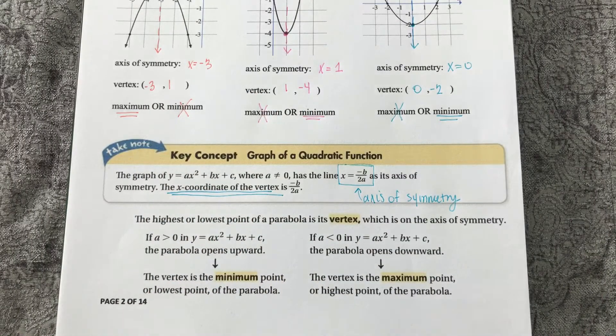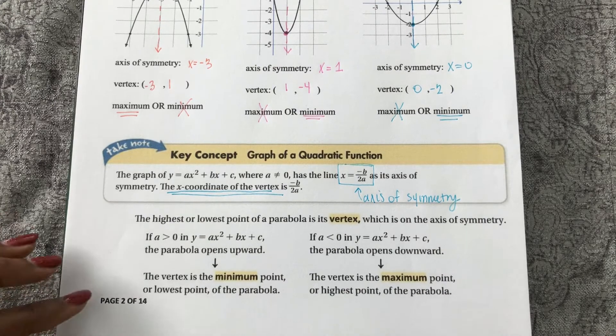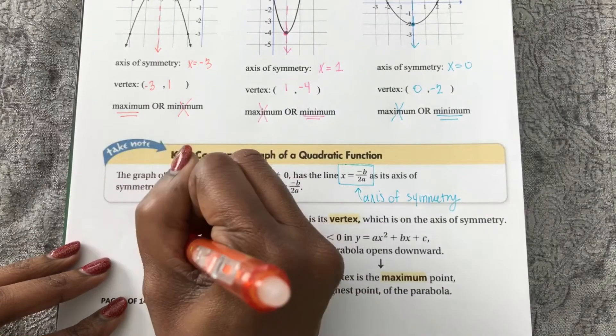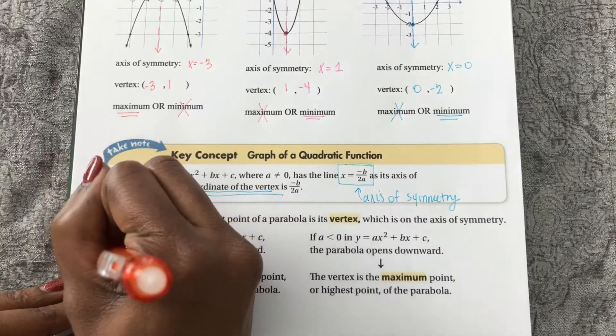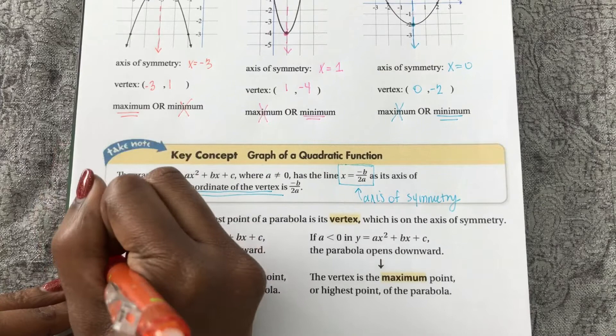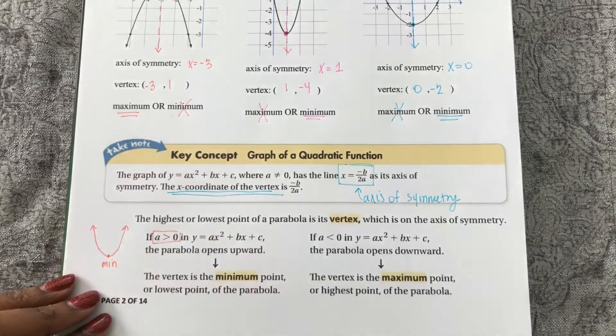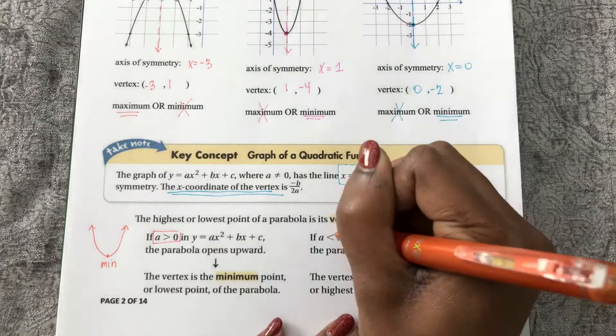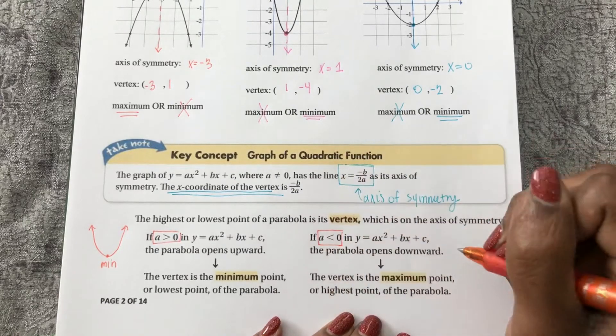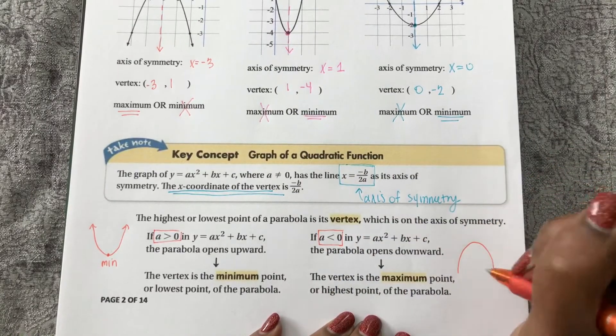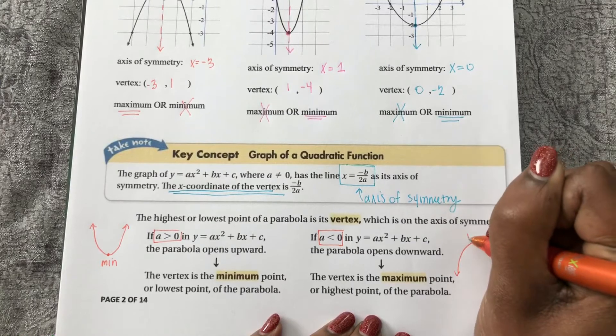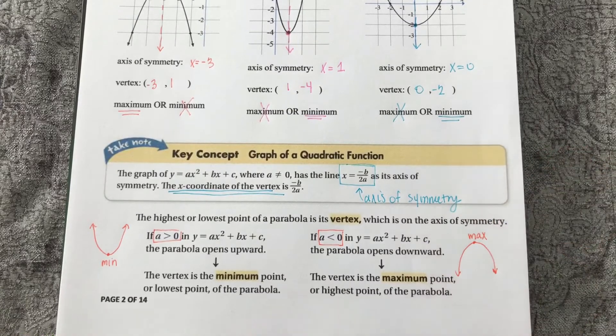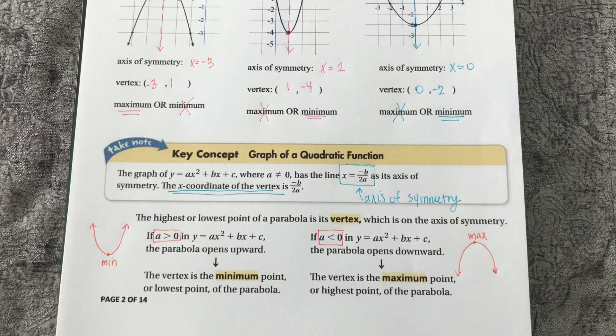Also, a quick way to determine whether or not your vertex is a maximum or a minimum. If your a value is greater than 0, that means that your parabola opens up, so your vertex will be a minimum. And if your a value is less than 0, that means your parabola opens down, and so your vertex is a maximum. So in our next examples, we will investigate these more algebraically.